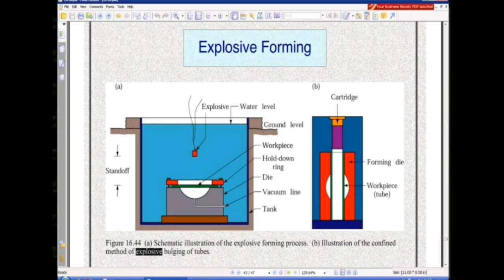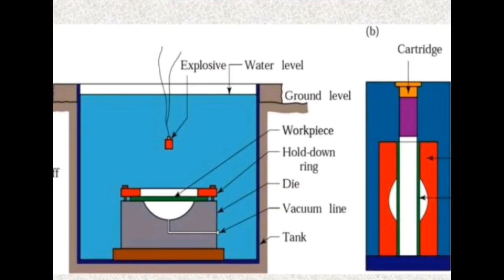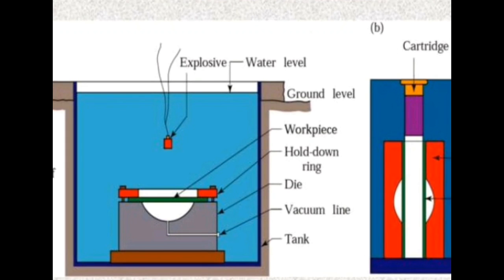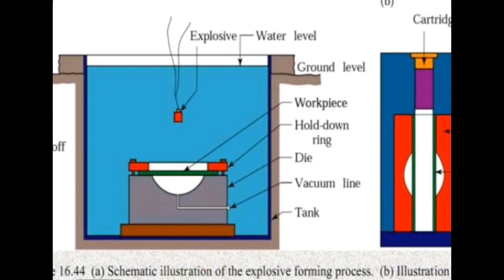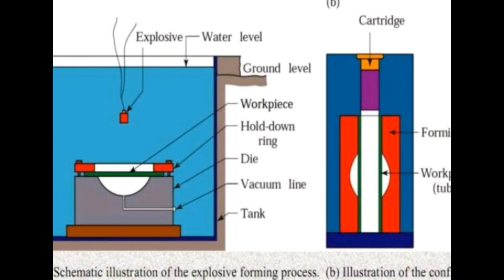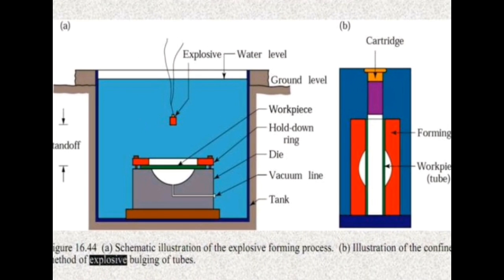This diagram shows the explosive forming setup. The explosive is held at a certain height from the workpiece. The workpiece is held by a clamp and a vacuum line runs through the die, and the whole assembly is set up in a tank. In another method, a workpiece, forming die, and a cartridge are present.